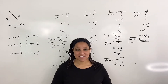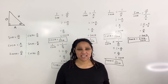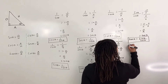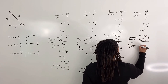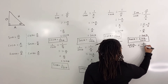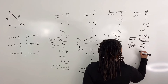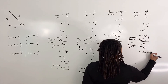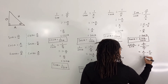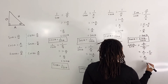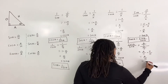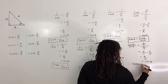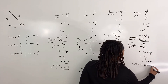Now we find the quotient identity for cotangent. We begin with cosine of theta over sine of theta, which is equal to adjacent over hypotenuse divided by opposite over hypotenuse. This is equal to adjacent over hypotenuse times hypotenuse over opposite. Our H's cancel, so we have adjacent over opposite, which is equal to cotangent of theta. Thus cotangent of theta is equal to cosine of theta over sine of theta.